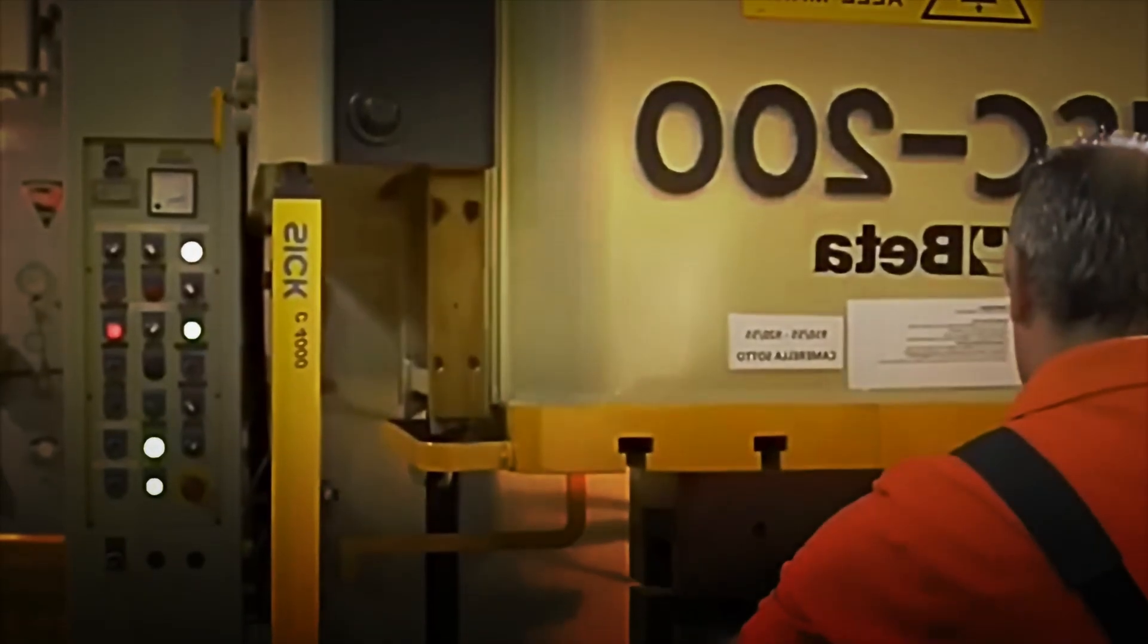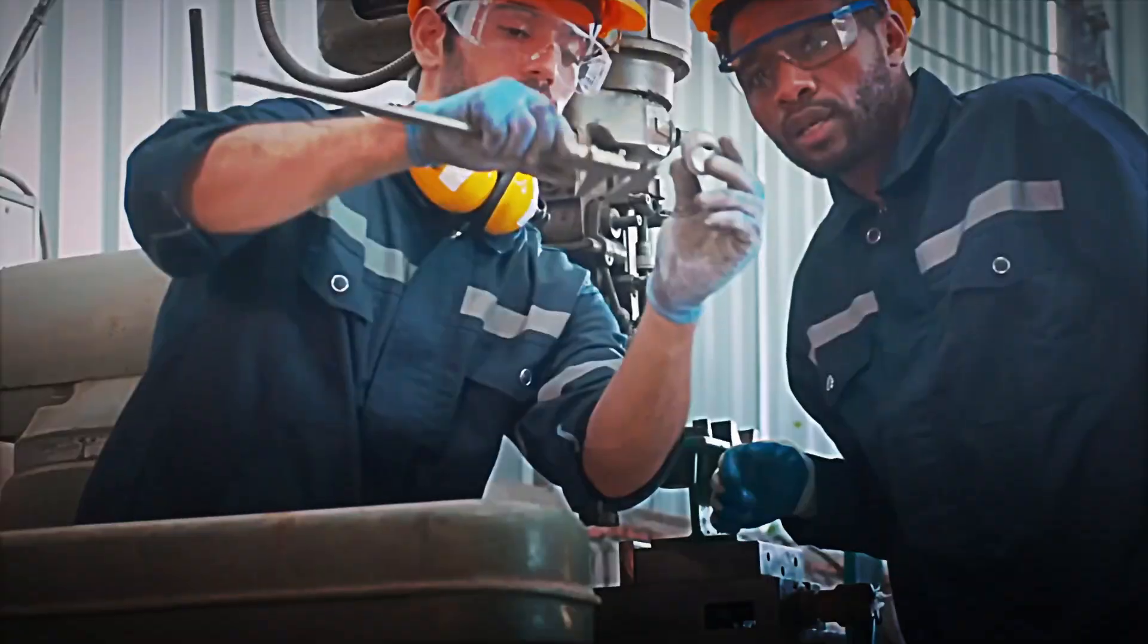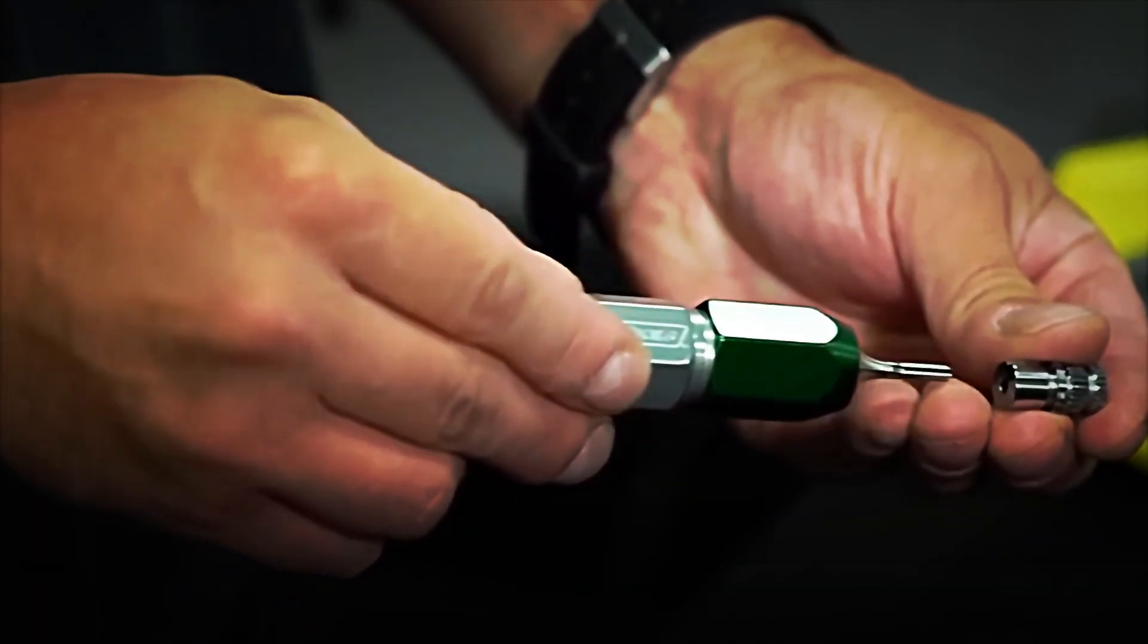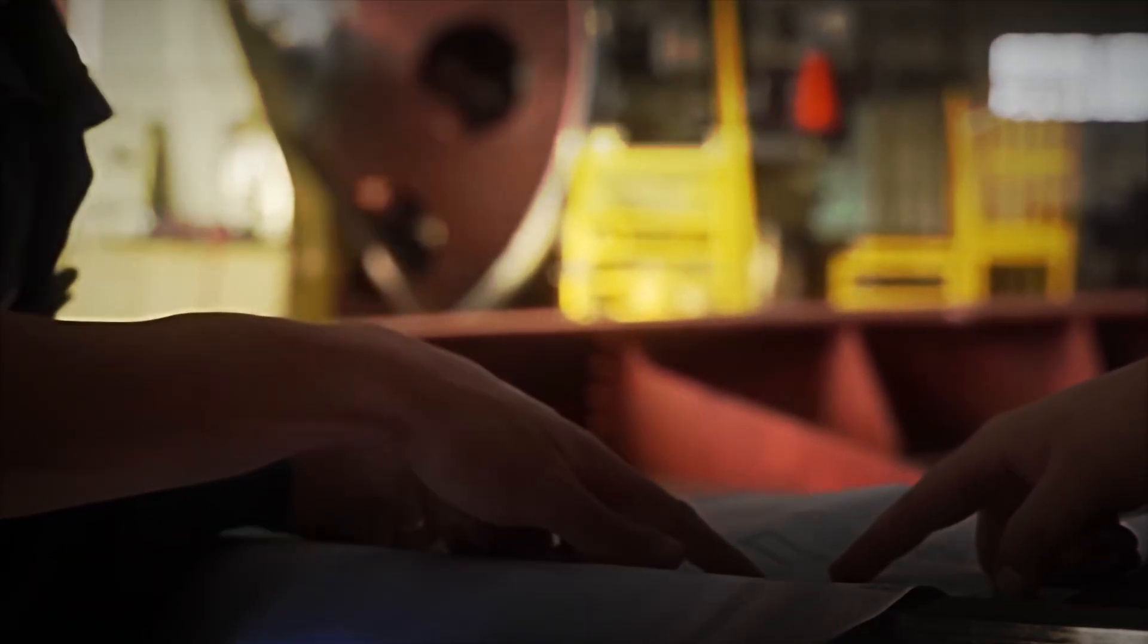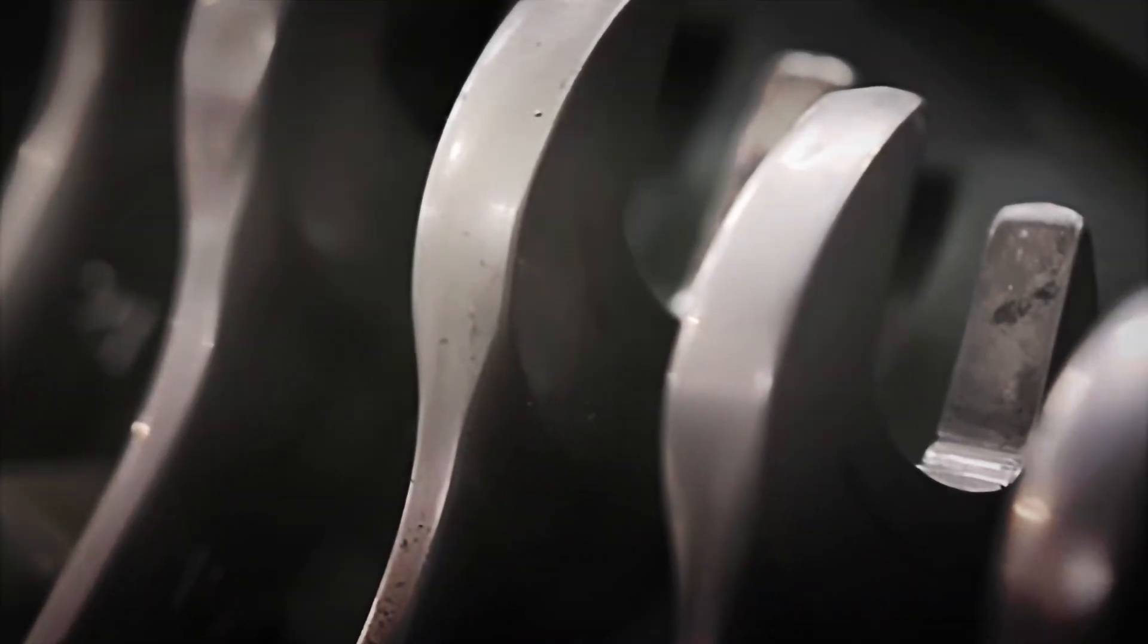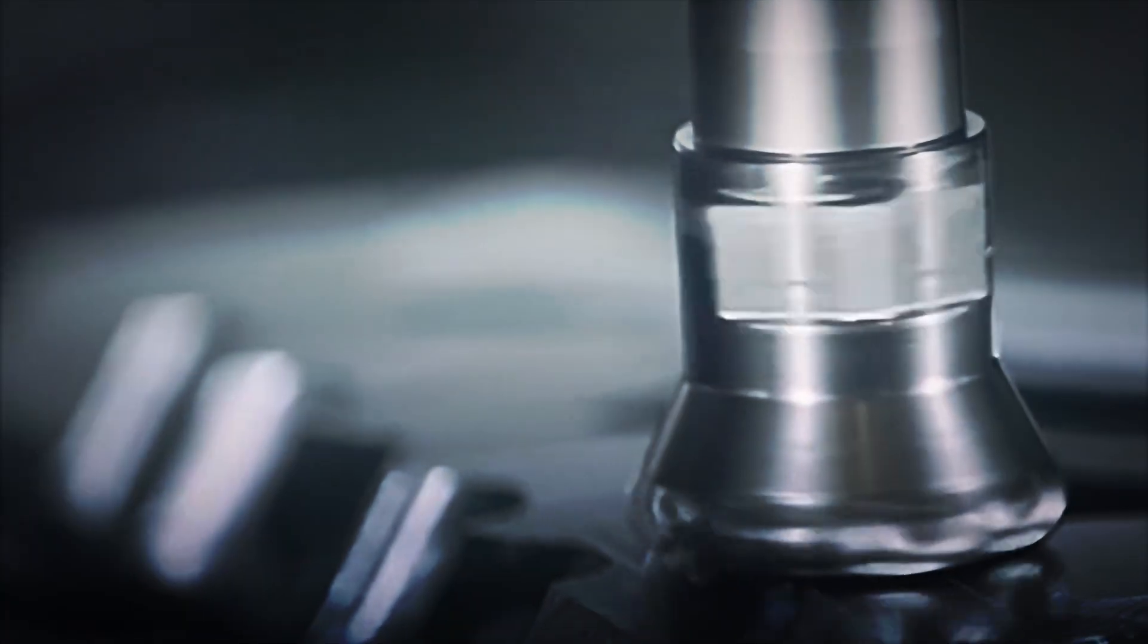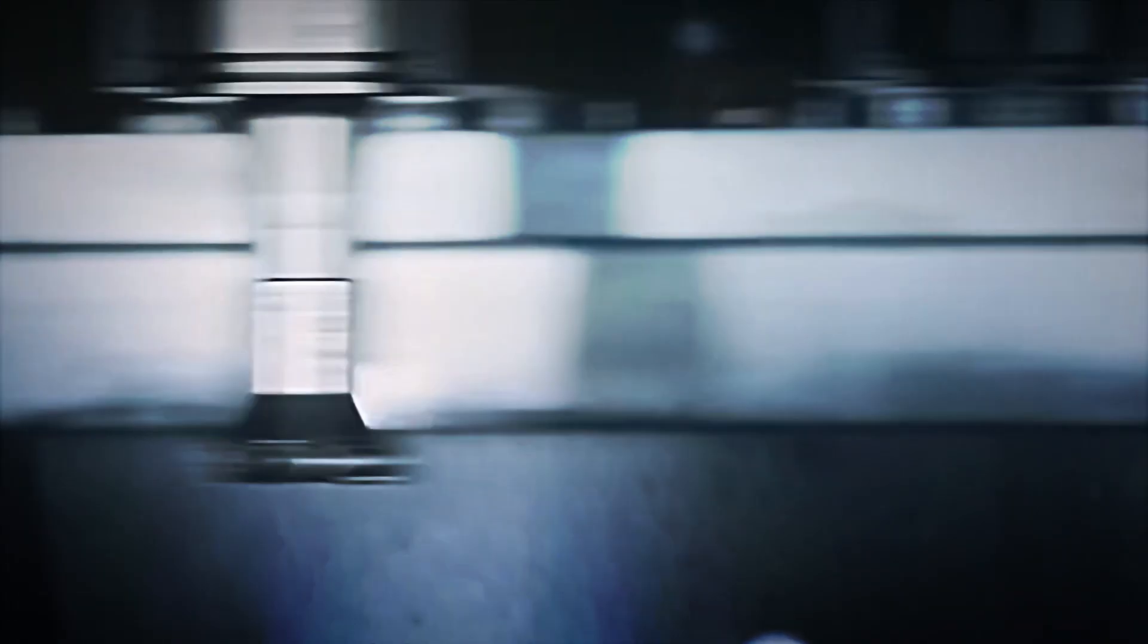The cleaning process includes shot blasting, where metallic microspheres impact the surface and remove burrs; degreasing with industrial detergents and automated rinses to remove oils; and in some cases, light pickling to dissolve small layers of oxide. Each batch is inspected with magnifying glasses to ensure that the edges are not rounded or eroded. In this phase, the key ceases to be a raw piece and begins its transformation into a finished tool.